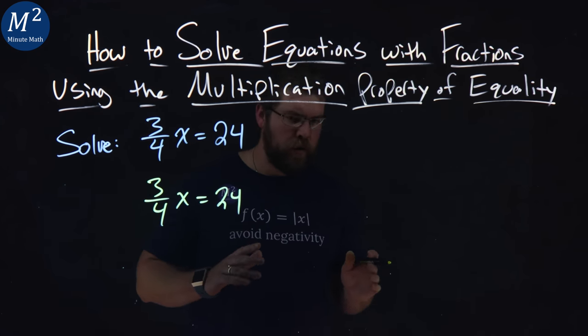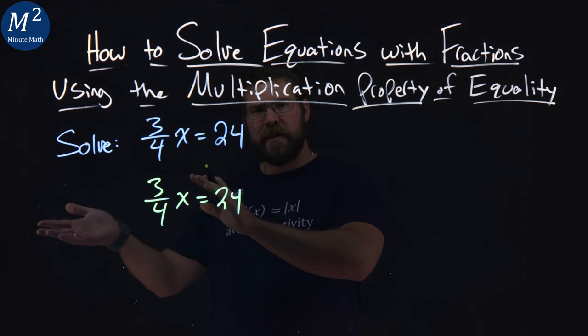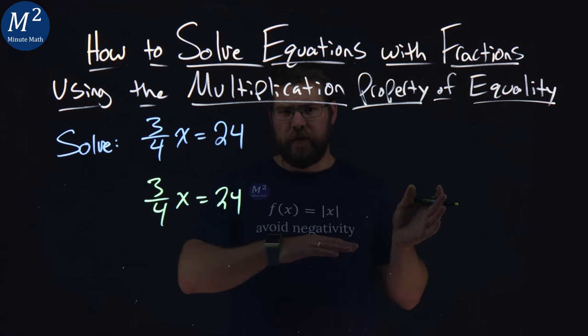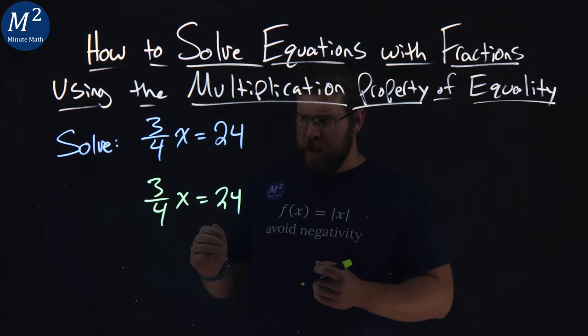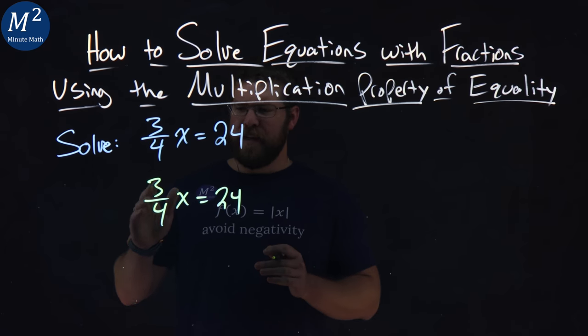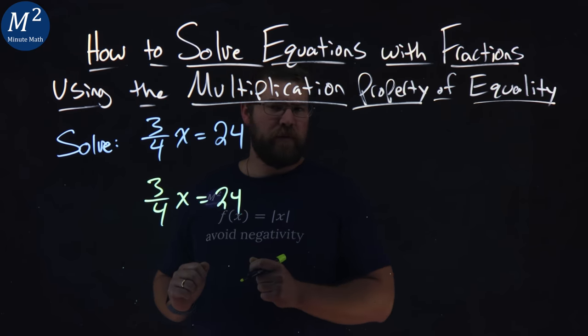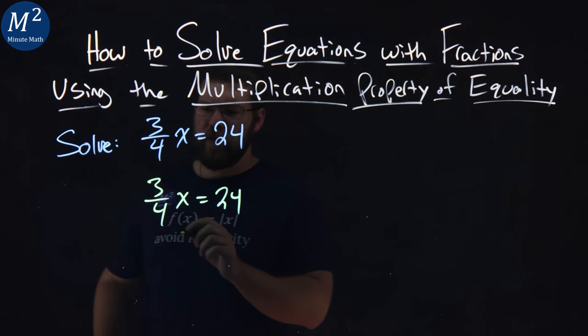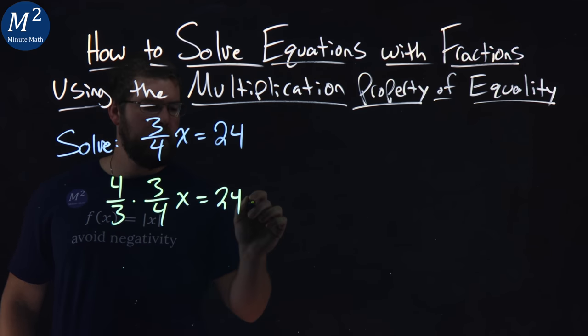Now, the multiplication property of equality says we can multiply one side of the equation by the same number to the other side of the equation, and it's fine. Well, how do we multiply something here to eliminate this 3/4? Well, if I multiply both sides by its reciprocal, 4/3...